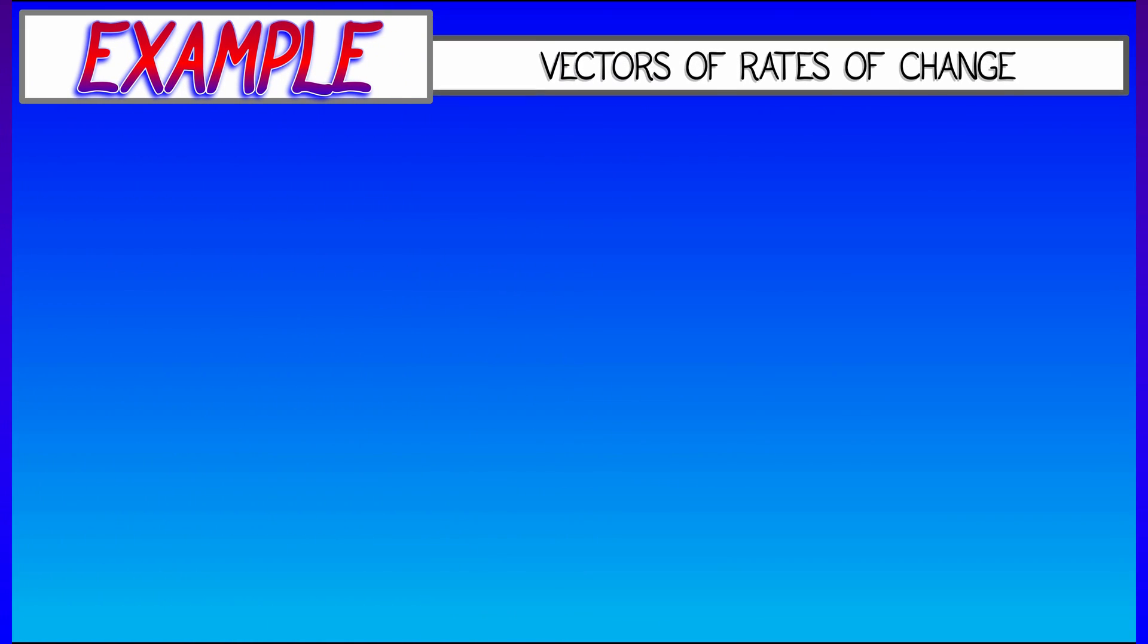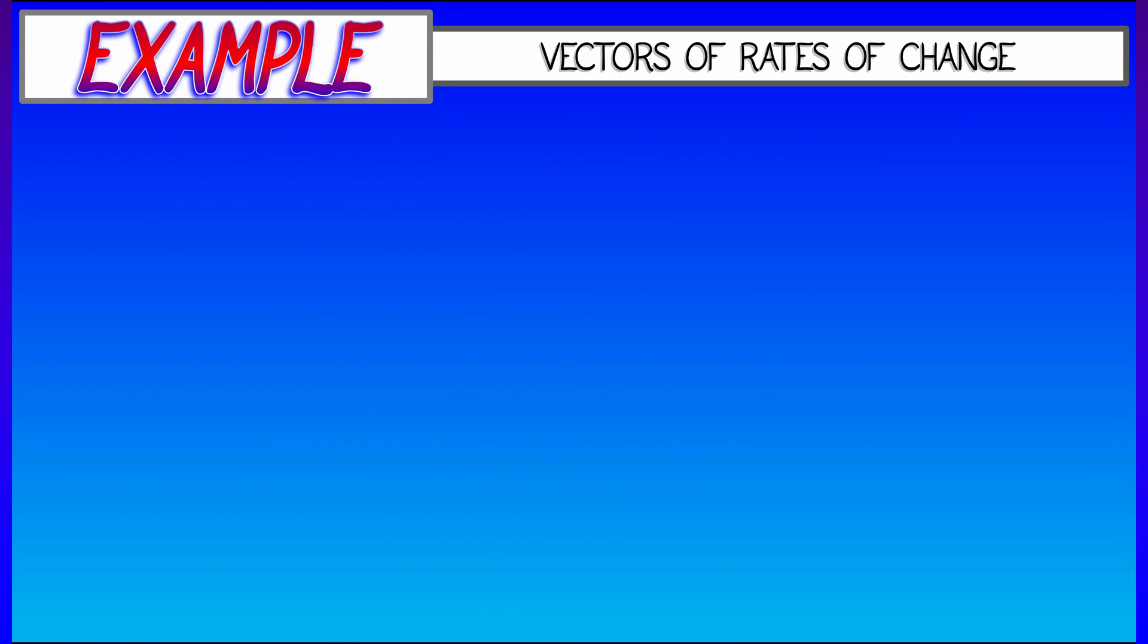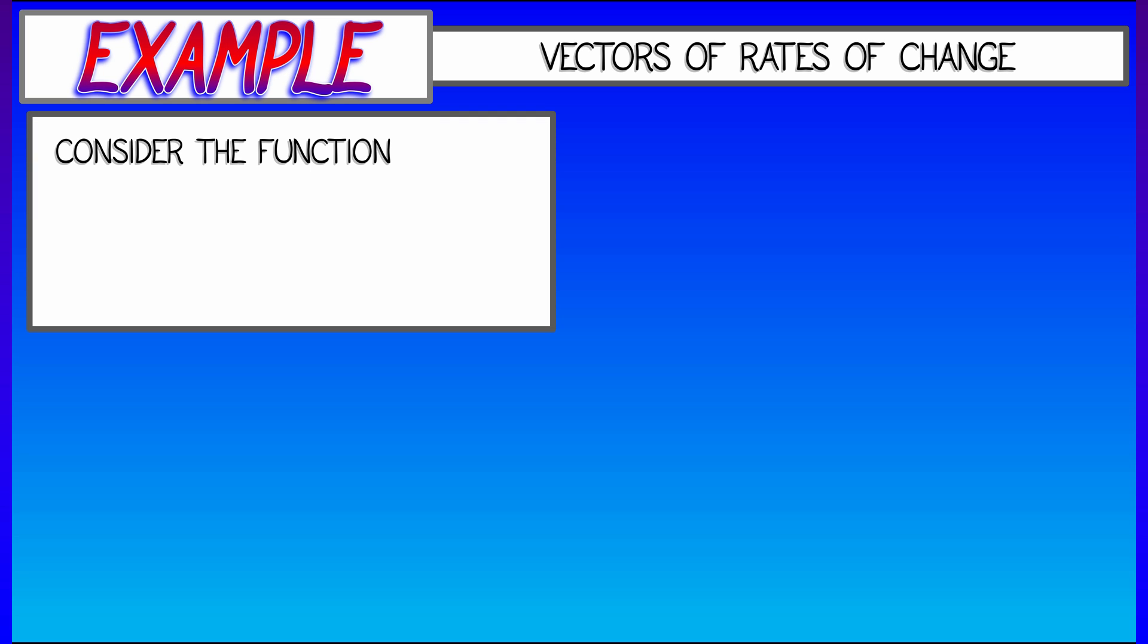Now, if we consider this in a particular example where I'll mix up some of the notation that's used, this might help you get used to it. Consider the function f that has inputs x, y, and z, outputs u and v. Let's say it's a simple polynomial function. u is xy squared minus x squared z and v is 3xy plus z cubed.